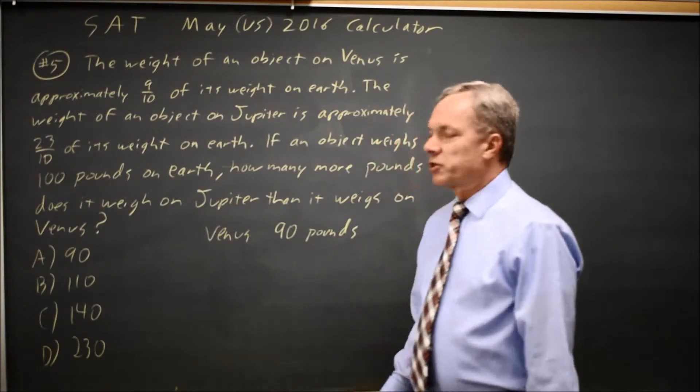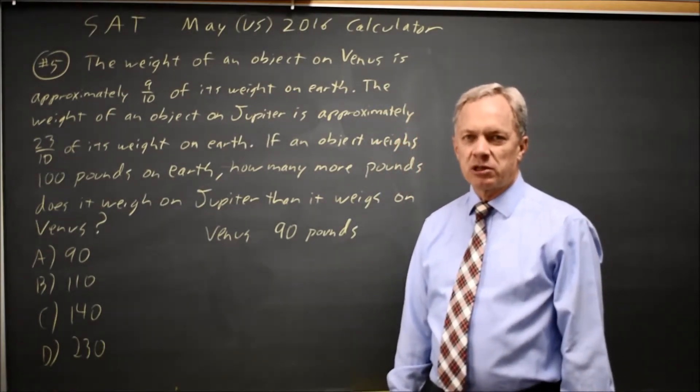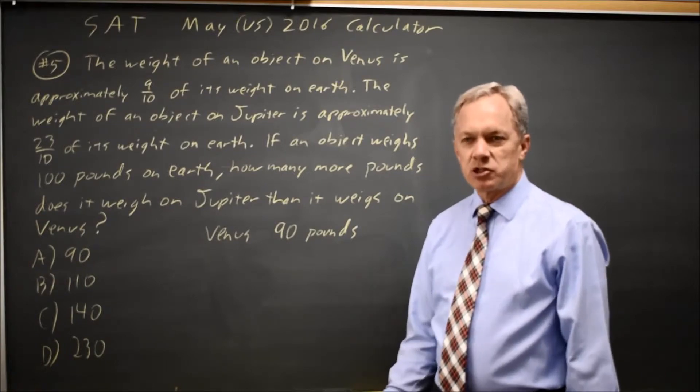And if it's 100 pounds on Earth and weighs 23 tenths as much on Jupiter, 23 tenths of 100 is 230.